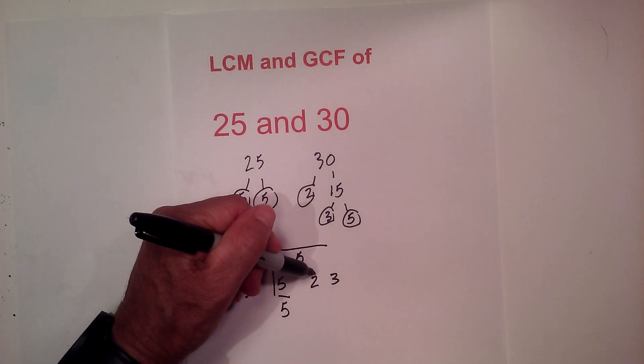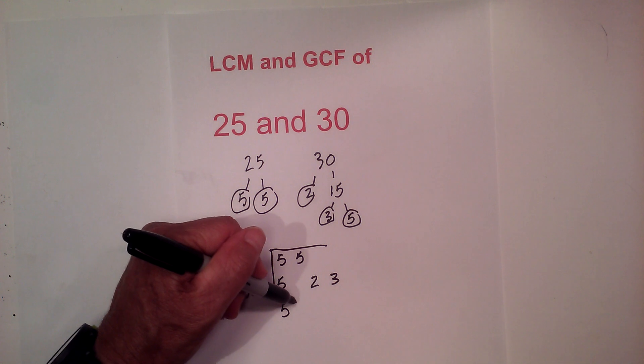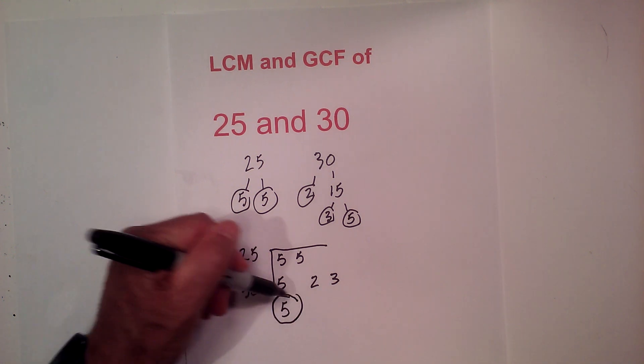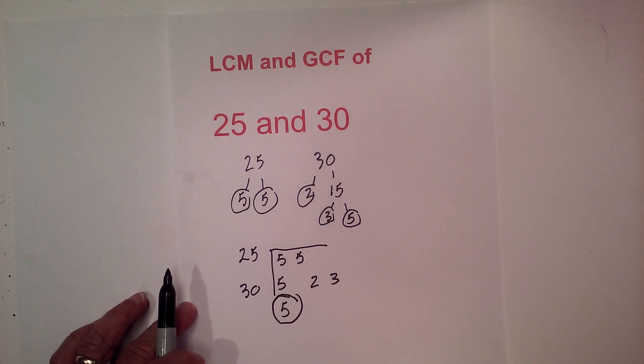There's not one here. Not a pair here. Not a pair here. So the greatest common factor of 25 and 30 is 5.